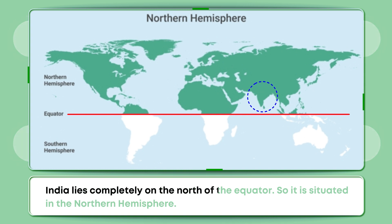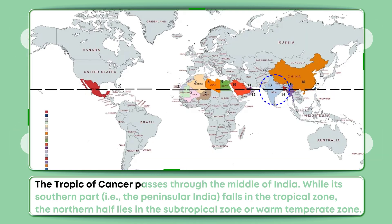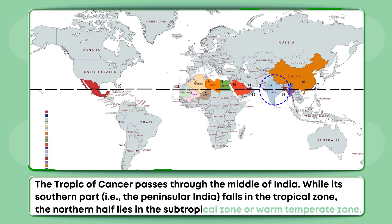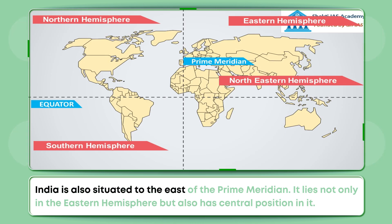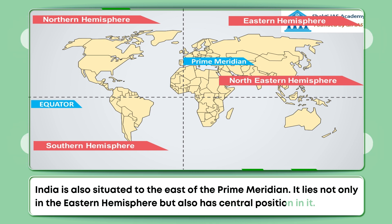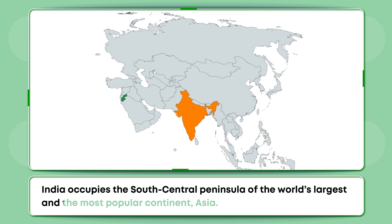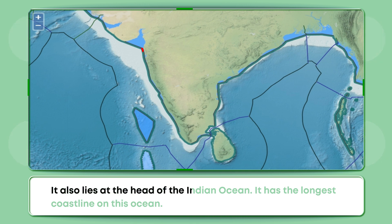India lies completely to the north of the equator, so it is situated in the Northern Hemisphere. The Tropic of Cancer passes through the middle of India. While its southern part, that is peninsular India, falls in the tropical zone, the northern half lies in the subtropical or warm temperate zone. India is also situated to the east of the prime meridian. It lies not only in the eastern hemisphere but also has a central position in it. India occupies the south-central peninsula of the world's largest and most populous continent, Asia. It also lies at the head of the Indian Ocean and has the longest coastline on this ocean.